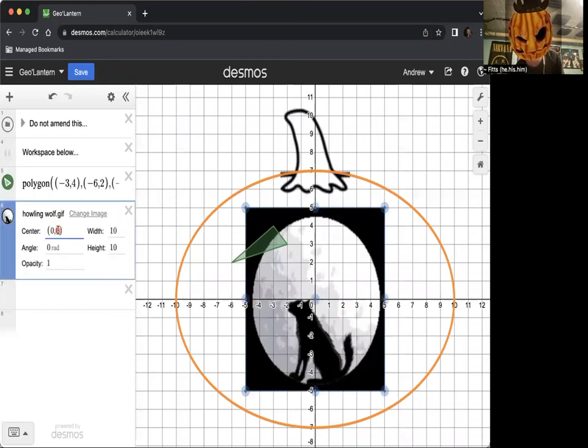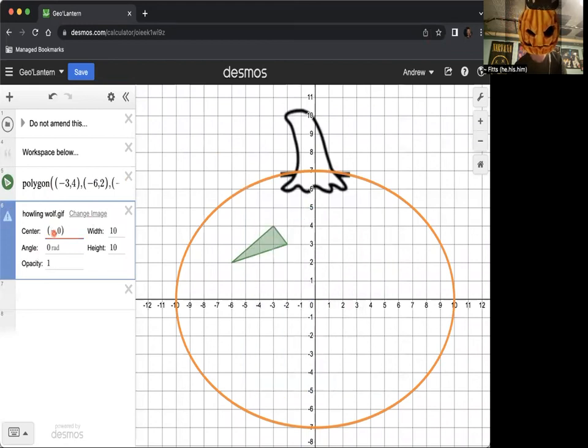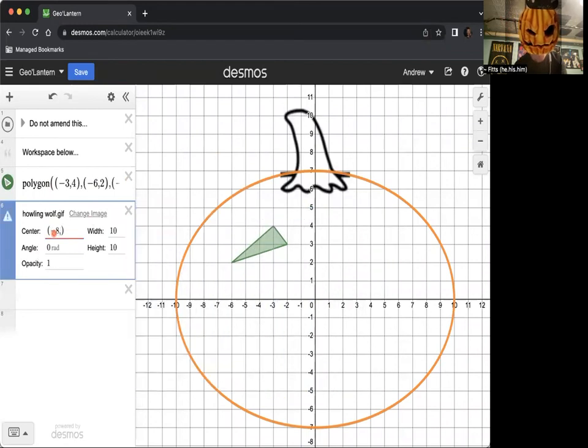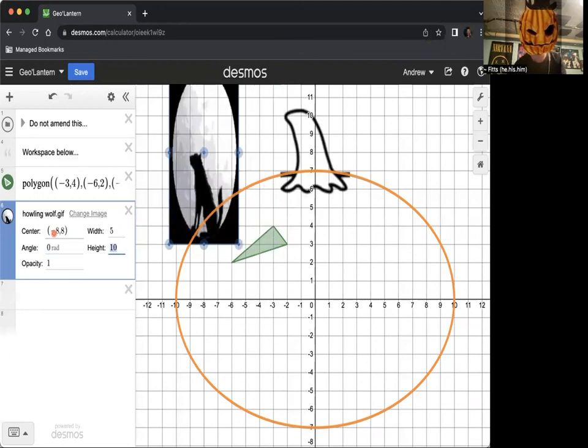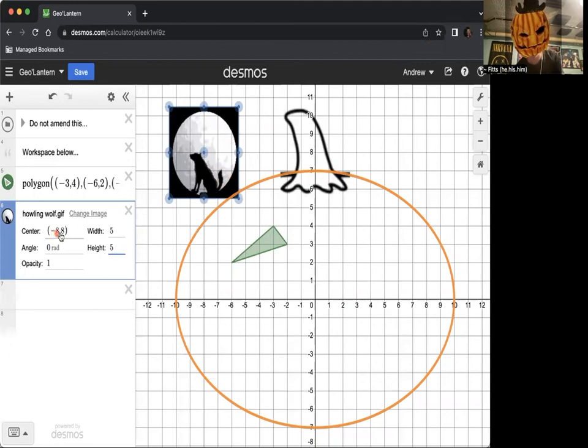And then if you want to change where it's located, you just change the center. Say I want it centered up here in the top left, like negative eight, eight, so I'll just change this to negative eight, eight, and then I can change the size. I can change the width to like five and five, or something like that, and there you go, and there's my little wolf up in the corner.